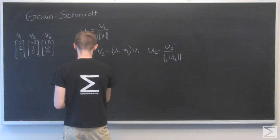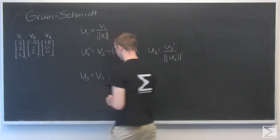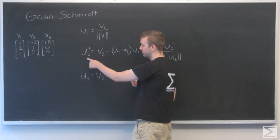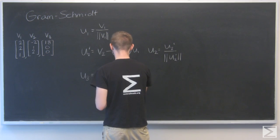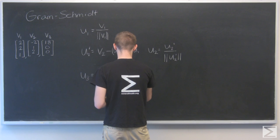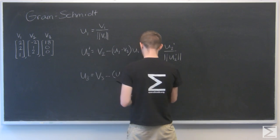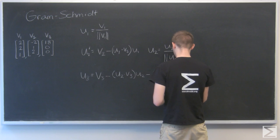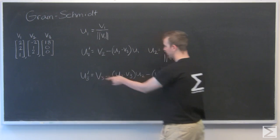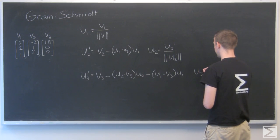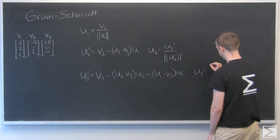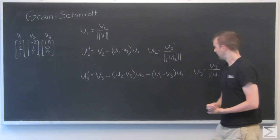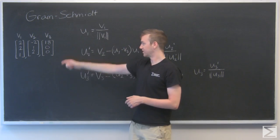And for U3, hopefully you can see the pattern here. Now we take V3. We're going to subtract the projection of V3 onto U2 and the projection of V3 onto U1. And we're not done yet. That's going to be prime. And the real U3 comes when we divide by its length to get it down to a unit vector. Sound good? We're going to try to do that with these three vectors now.